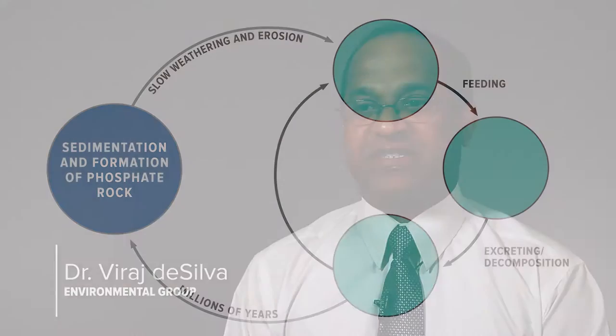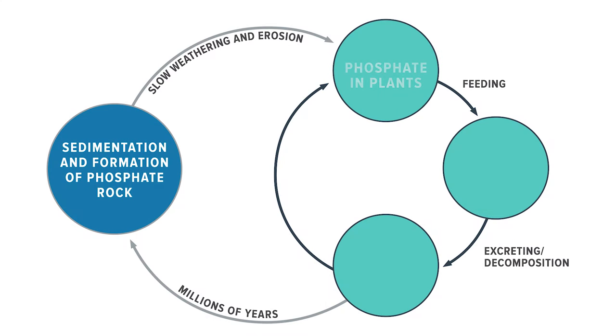Phosphorus enters wastewater from various ways. Plants, animals, and soils contain phosphorus.